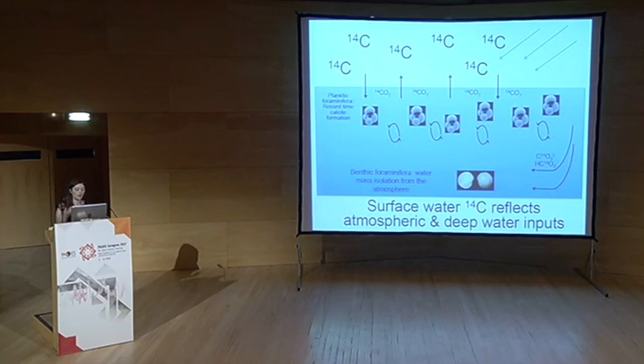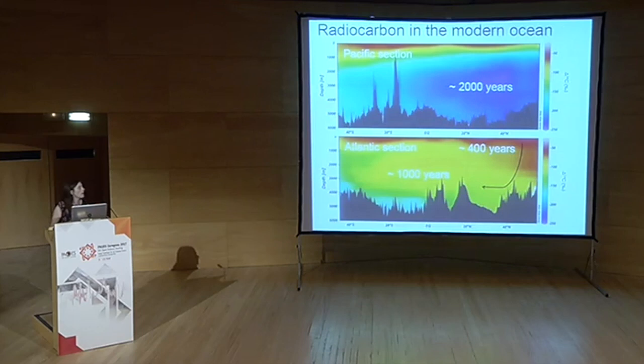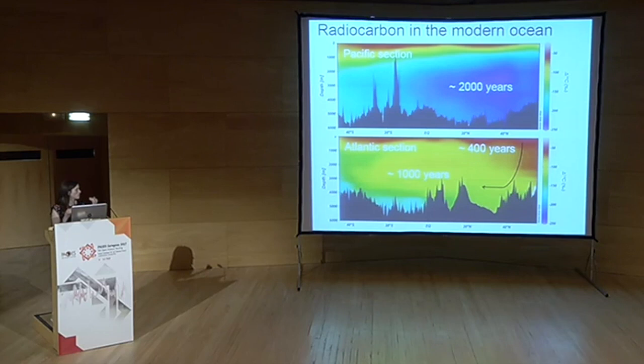A caveat for using planktonic foraminifera as a dating tool is that upwelling of older radiocarbon-depleted water creates an offset between surface water and the atmosphere. In the modern ocean, the broad-scale pattern is predominantly controlled by the overturning circulation. In the North Atlantic high latitudes, young well-equilibrated water subducts down to the deep, where it progressively ages along the deep circulation pathway.